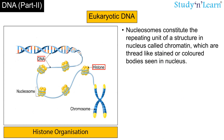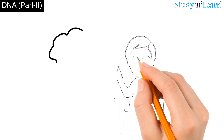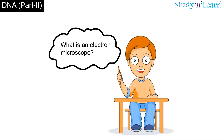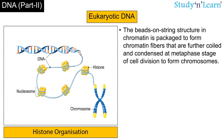Nucleosomes constitute the repeating unit of a structure in the nucleus called chromatin, which are thread-like, stained or coloured bodies seen in the nucleus. The nucleosomes in chromatin are seen as a beads-on-string structure when viewed under an electron microscope — an advanced technique for obtaining high-resolution images of biological and non-biological specimens. The beads-on-string structure in chromatin is packaged to form chromatin fibers that are further coiled and condensed at the metaphase stage of cell division to form chromosomes.